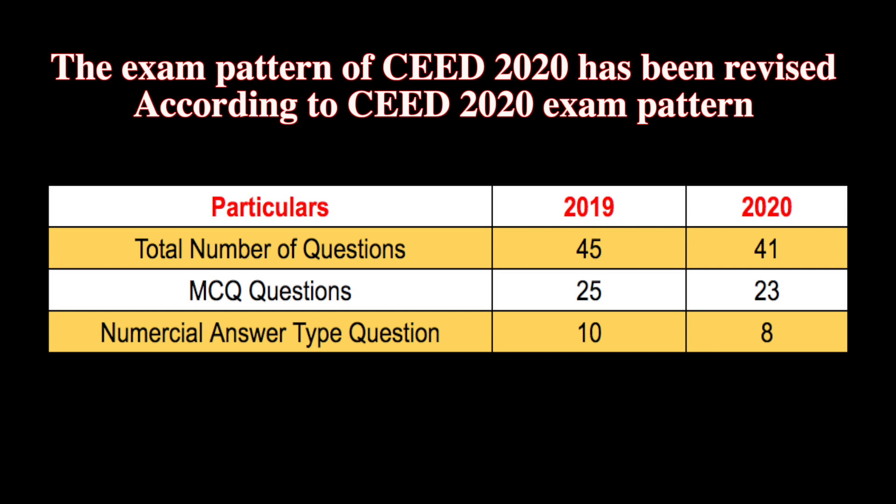The exam pattern of CEED 2020 has been revised. There will be fewer questions in Part A and Part B. Section A consists of three parts: Numerical Answer Type, Multiple Select Question, and Multiple Choice Question. In 2019, NAT had 10 questions whereas the same section contains 8 questions in 2020. Candidates had to answer 25 questions in MCQ in 2019, whereas they will answer 23 questions in 2020. The total questions in Section A were 45 in 2019, decreased to 41 this year.